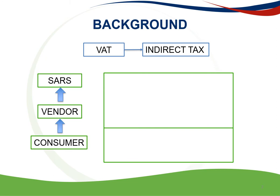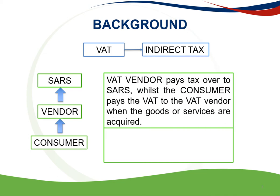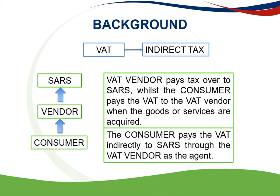However, in certain instances an enterprise registered as a VAT vendor may claim the VAT it has paid back from SARS. It is therefore very critical to understand the mechanisms of VAT in an enterprise as it has a direct cash flow effect on the enterprise. As VAT is an indirect tax, it means the tax is not assessed directly by SARS but indirectly through the taxation of transactions. The supplier or VAT vendor must pay the tax over to SARS, while the consumer pays the VAT to the supplier when goods or services are acquired. The consumer therefore pays VAT indirectly to SARS through the VAT vendor as the agent.